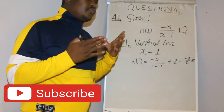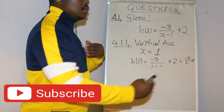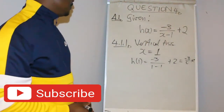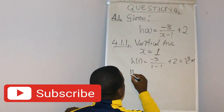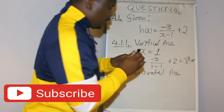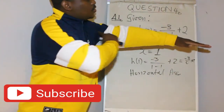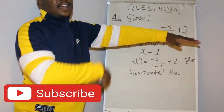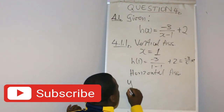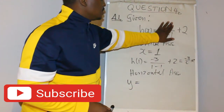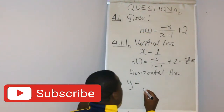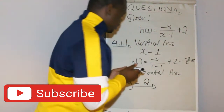Throughout this function, the graph will not be defined where x equals 1. The domain is defined everywhere except that point. That's your vertical asymptote. For the horizontal asymptote, we use the remaining part of the function, which gives us y is equal to 2. So your horizontal asymptote is y equals 2.